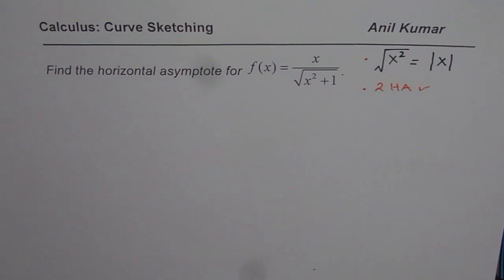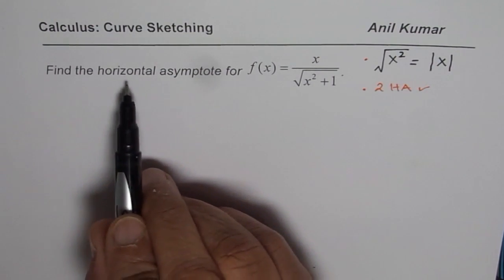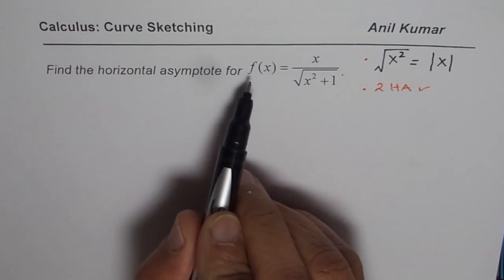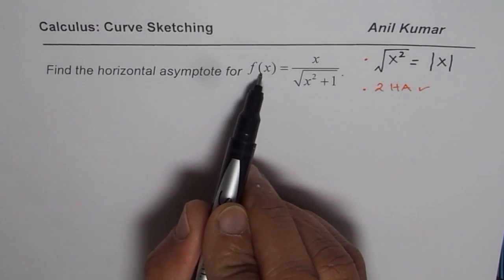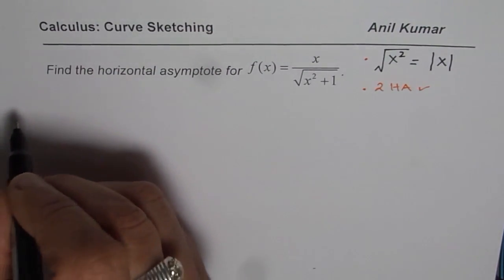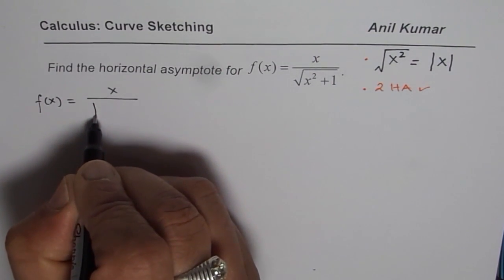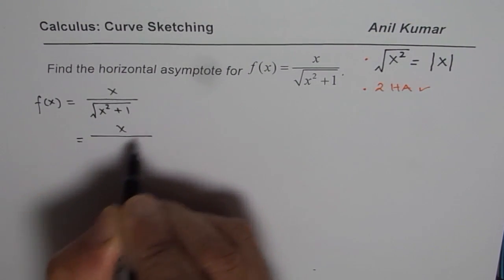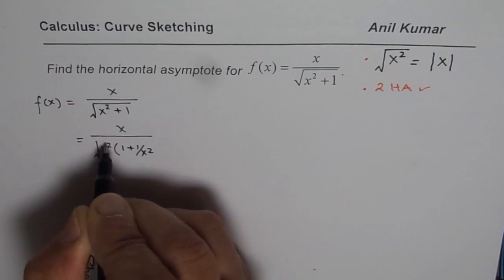In this particular example, you will note that we have two horizontal asymptotes. Let us first simplify the function itself. When we say horizontal asymptote, we are trying to understand if the function approaches a value as x approaches positive or negative infinity. If the function approaches a value, then we have a horizontal asymptote. So f(x) = x over square root of x squared plus 1. We can write this as x over — factoring out x squared — the square root of x squared times 1 plus 1 over x squared.